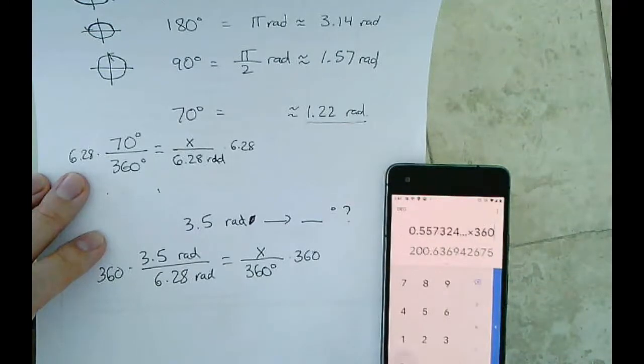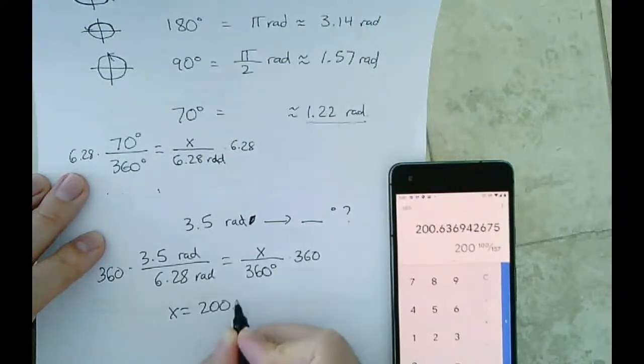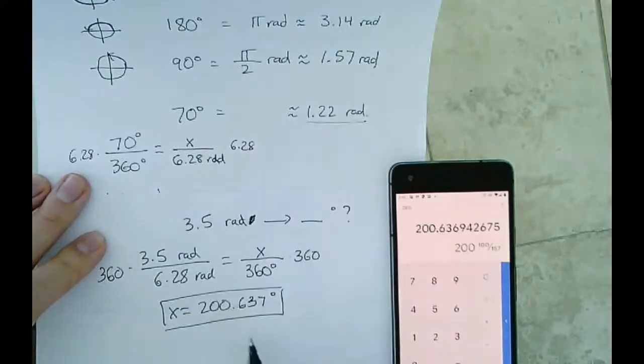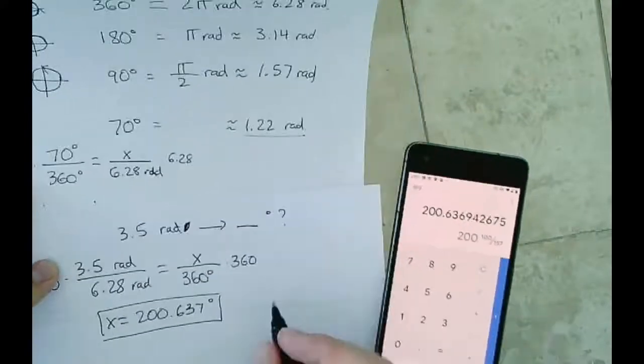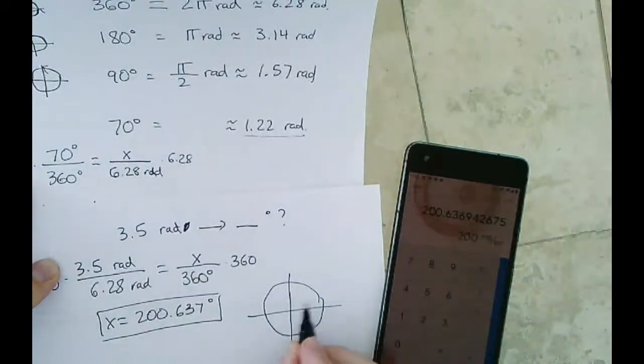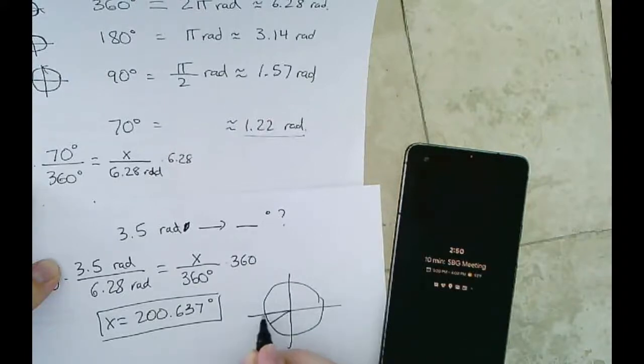So I have an approximate answer of x is equal to 200.63. I'm going to round that up to 7 degrees right here. So 3.5 radians is about 200 degrees. And if we were to make this on the Ferris wheel right here, 200 degrees is, well, this is 180, so 200 is right here. 3.5 radians. Well, we know that 3.14 radians is right here because that's 1π. So 3.5 being a little bit more, again, makes a lot of sense right here.